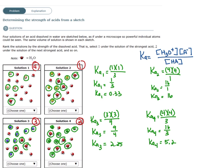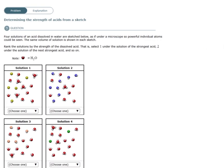Let's see another example. Again, we have four solutions of acid dissolving in water. And we're supposed to rank these solutions, one being the strongest acid and four being the weakest acid. So I'm going to go ahead and start off with a KA expression, just to remind me what I'm comparing.